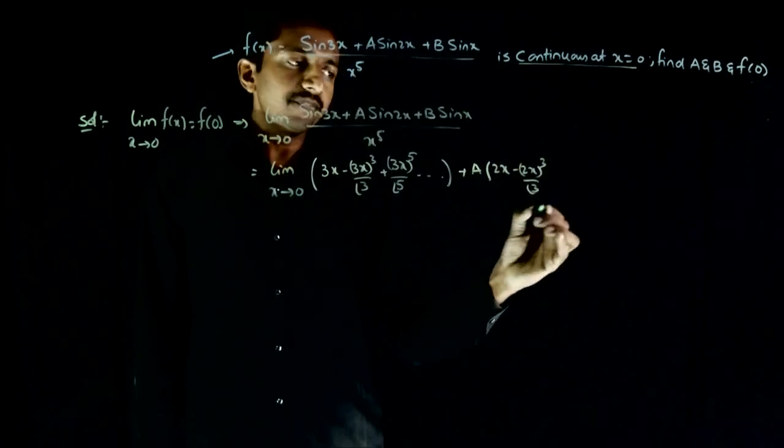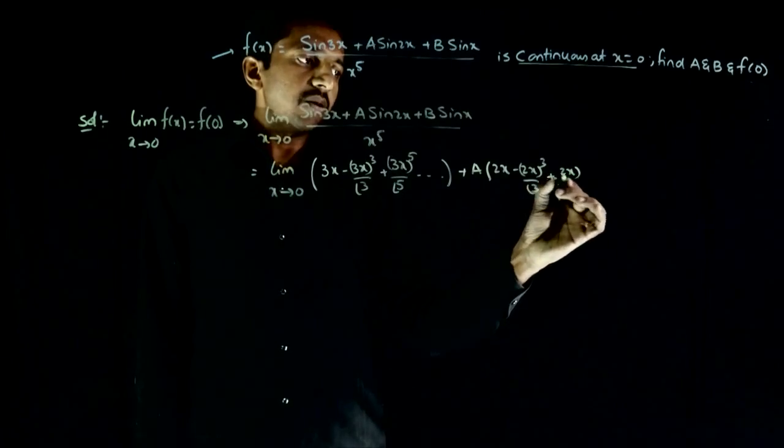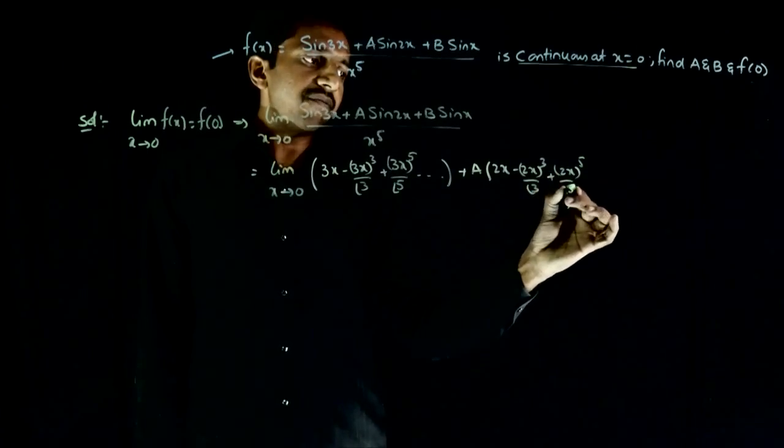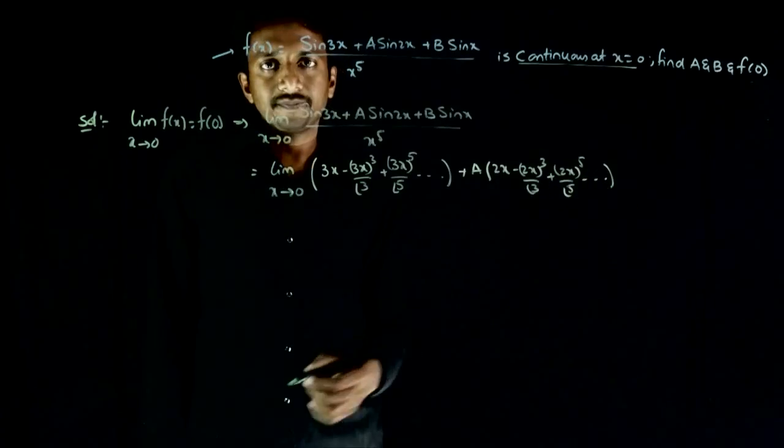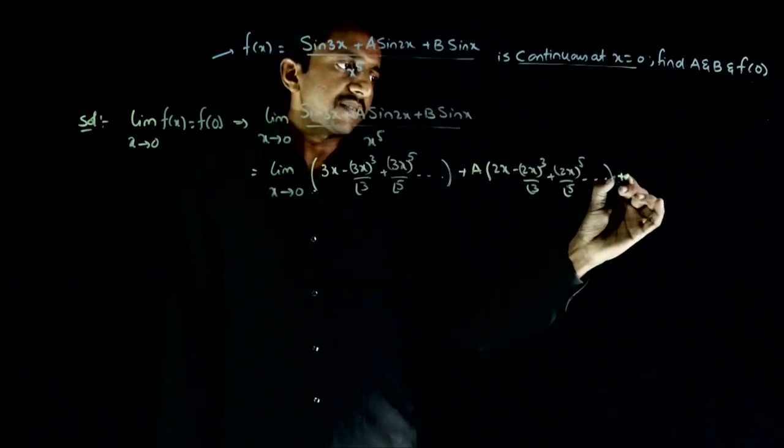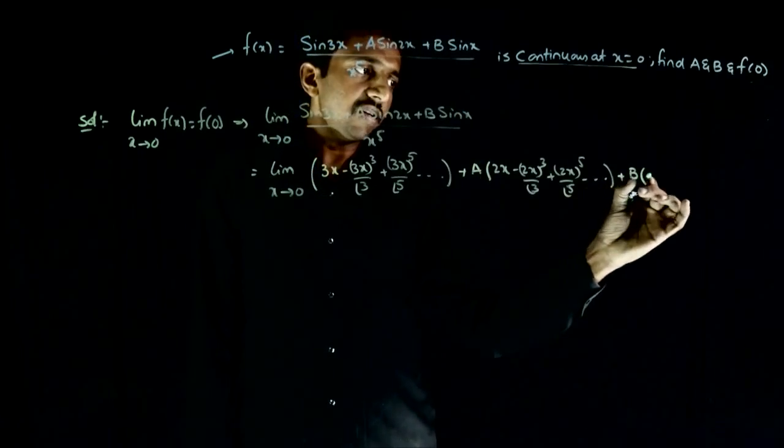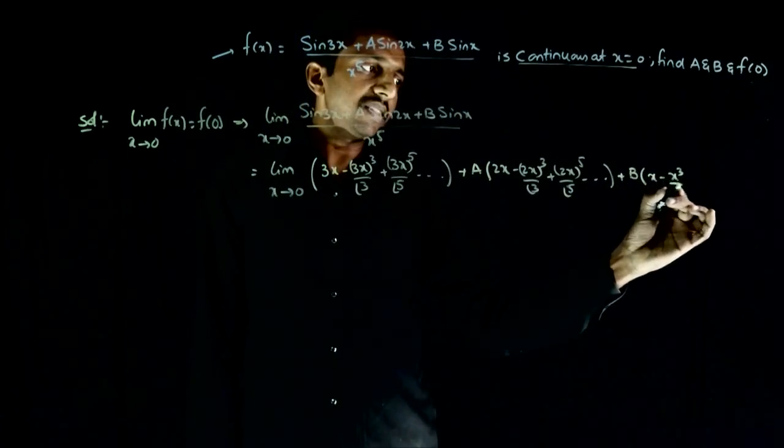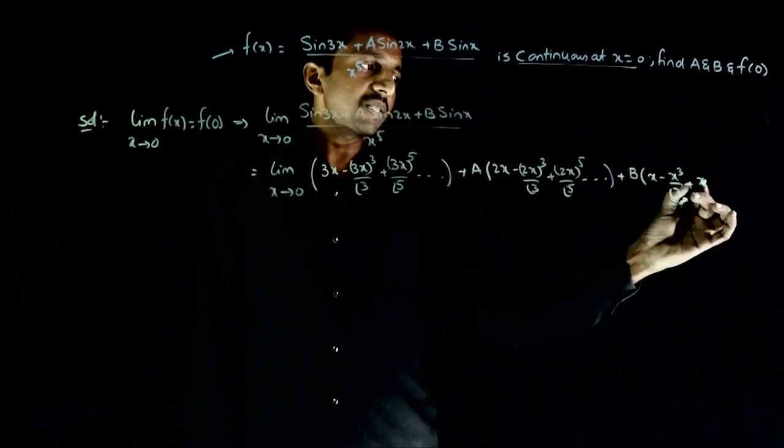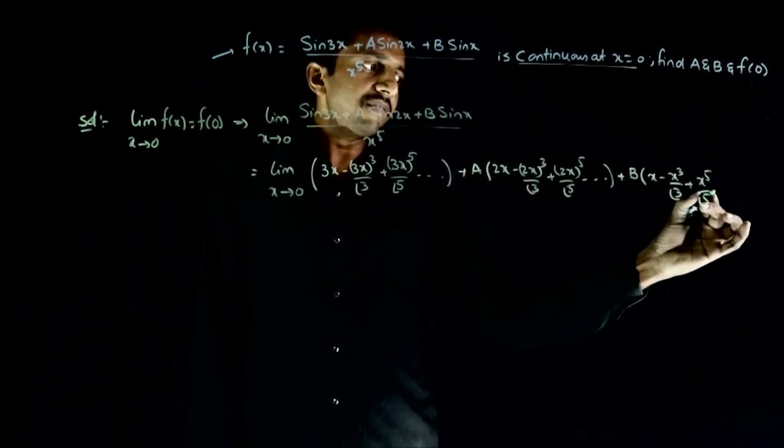by 3 factorial plus 2x whole power 5 by 5 factorial and so on. Plus b times sin x expansion is x minus x cube by 3 factorial plus x power 5 by 5 factorial and so on.